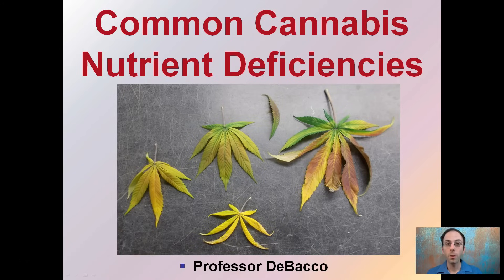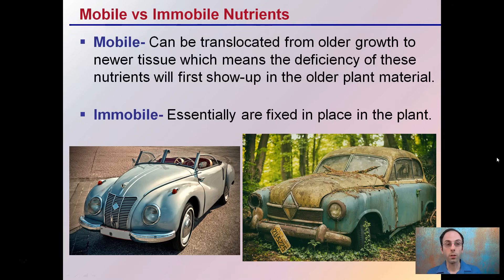Here I'm going to cover some common cannabis nutrient deficiencies and some of the characteristic looks that these may have. We can see here all these plants' leaves don't look quite right. Some of it is due to light damage and other abiotic factors, and some is also related to nutrients. Being able to distinguish and identify those is important to any efficient grow operation.